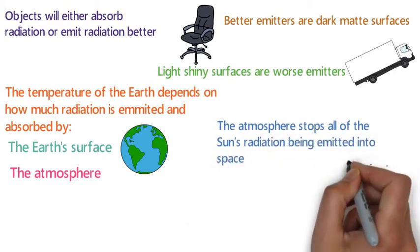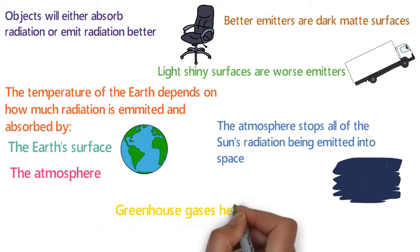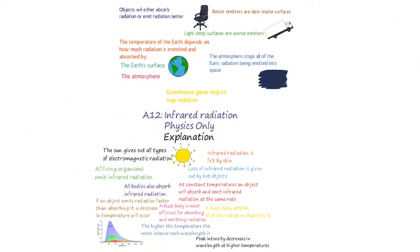Also, if we didn't have any greenhouse gases in our atmosphere, such as methane and carbon dioxide, then infrared radiation emitted by the earth's surface would not be trapped. This trapping of infrared radiation is important as it keeps the earth warm.